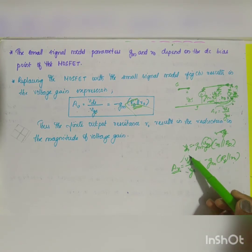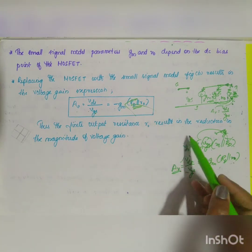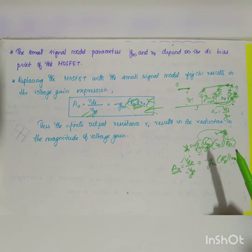Voltage gain, which is equal to output voltage divided by input voltage, which is equal to the remaining factors minus GM into RD parallel to R naught. That is what is written here. This equation gives your gain. These are the important points which you can write for your small signal equivalent model.